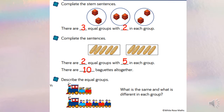On the final question, it asks us to describe the equal groups — what is the same and what is different in each group? I can see children and carriages in each group, and one train in each group. In the first train, there are two carriages with five children in each. In the second train, there are five carriages with two children in each. So do we have the same amount of children in each group? Of course we do. We have two lots of five, which is ten, or five lots of two, which is also ten.